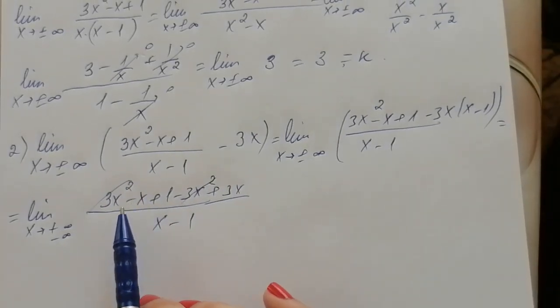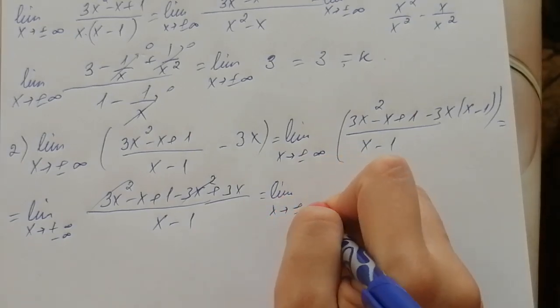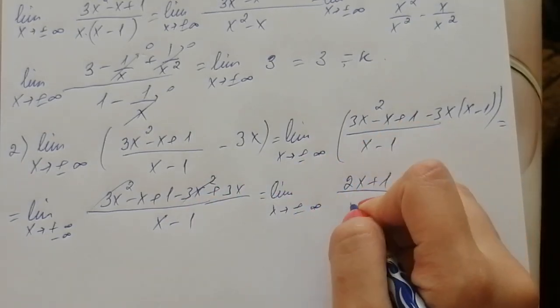3x squared will be cancelled out, leaving negative 2x plus 1 over x minus 1.